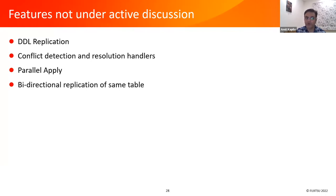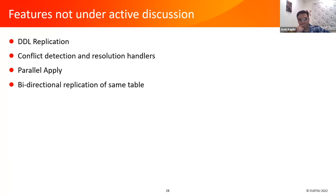We also want to do parallel apply. For streaming transactions, we currently just write to the temporary file and then apply at commit time. We can slowly start applying in a background worker and also start applying normal transactions as they come rather than waiting for commits, via multiple workers. This should help improve the speed of replication. We also don't yet have bi-directional replication of the same table, which limits the use of logical replication in PostgreSQL. We have started working on this and hope to see this feature in future releases.